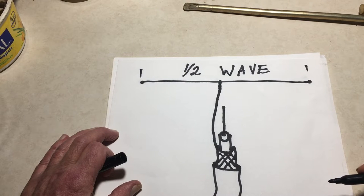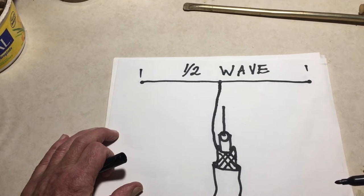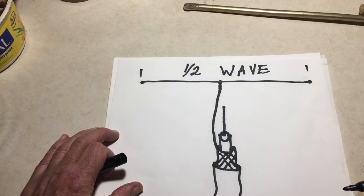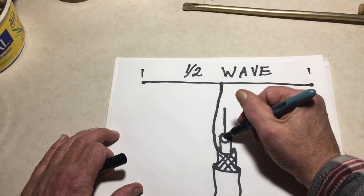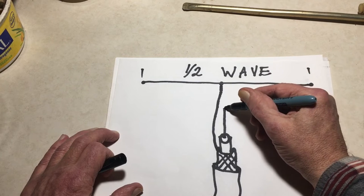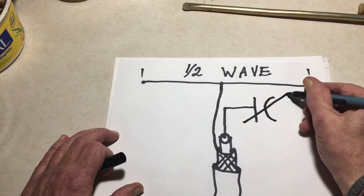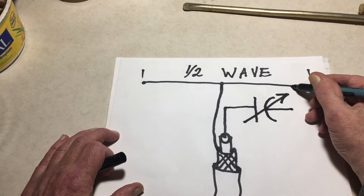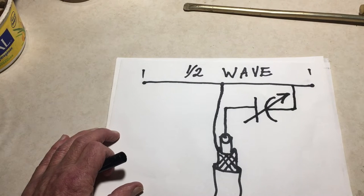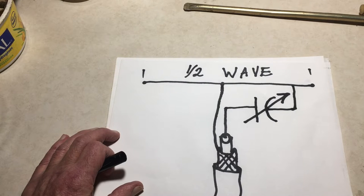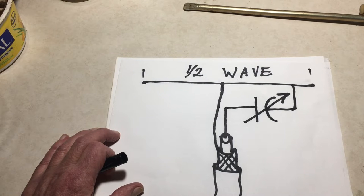Now first thing you're going to say, why is my driven element grounded? Well the reason for that is because according to antenna theory the voltage at the center of a half wave antenna is zero, so you could ground it at that point.